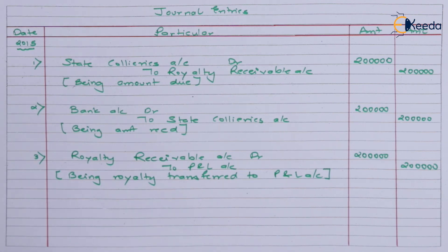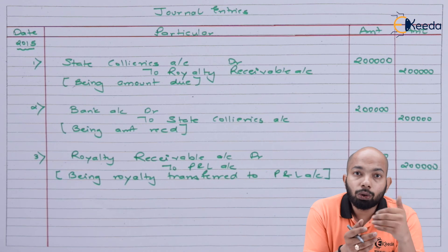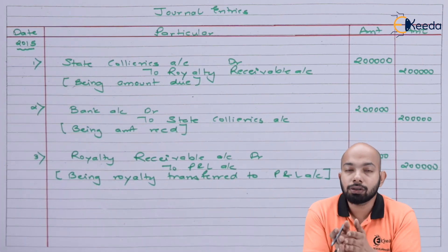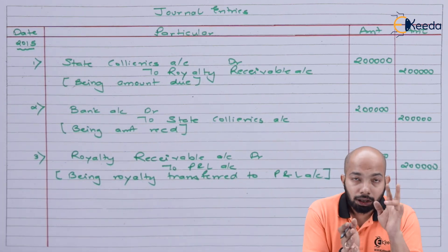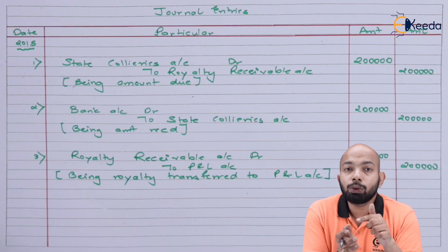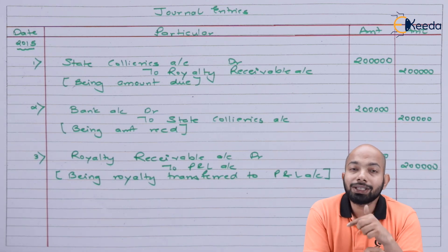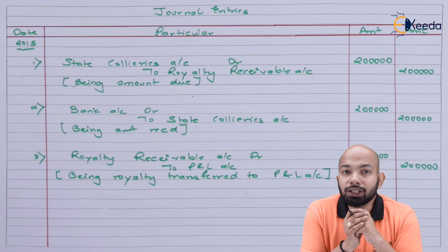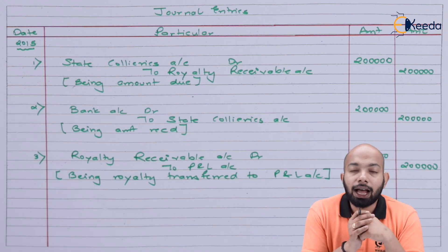This is how journal entries are passed in the books of the lessor. With this illustration, it should be clear how to go ahead and make such journal entries. If you also need to prepare the ledger, you will be able to do so using these same details. Thank you for watching — stay tuned with Ikeda and keep subscribing.